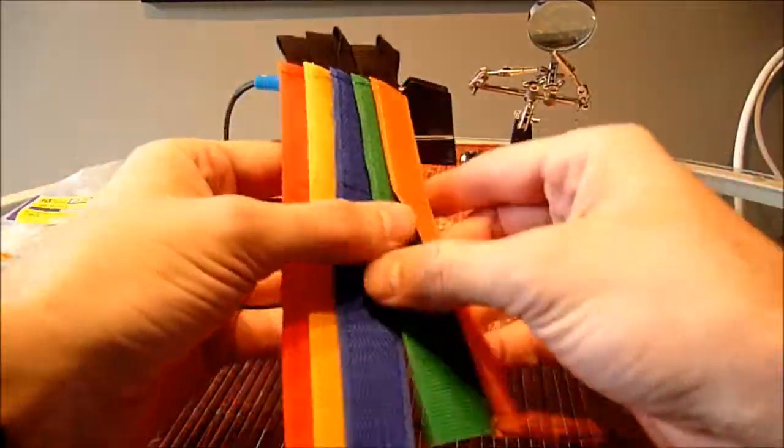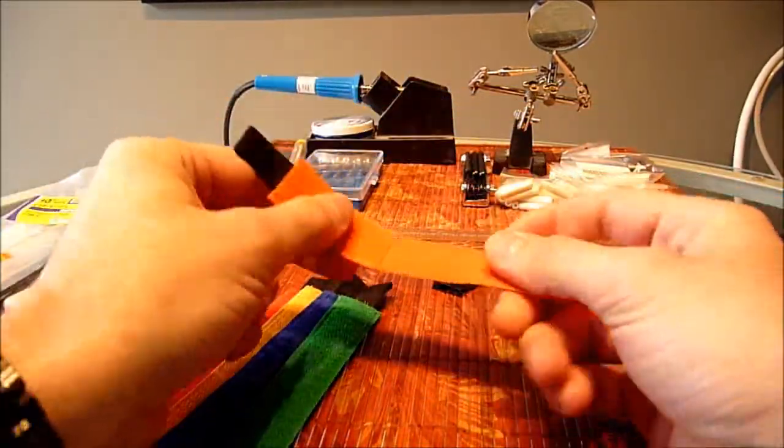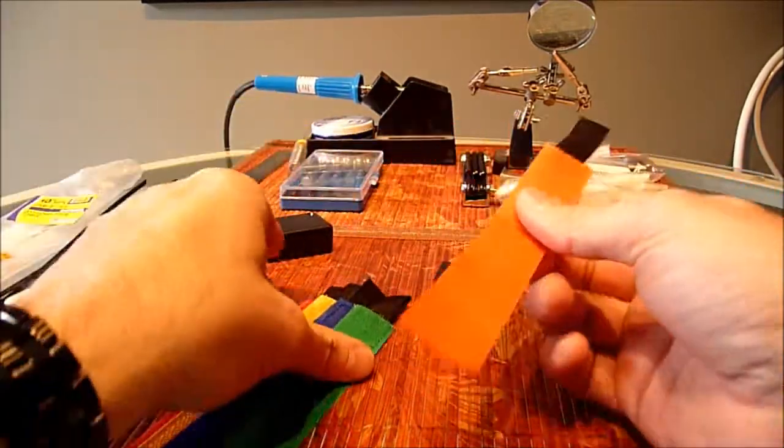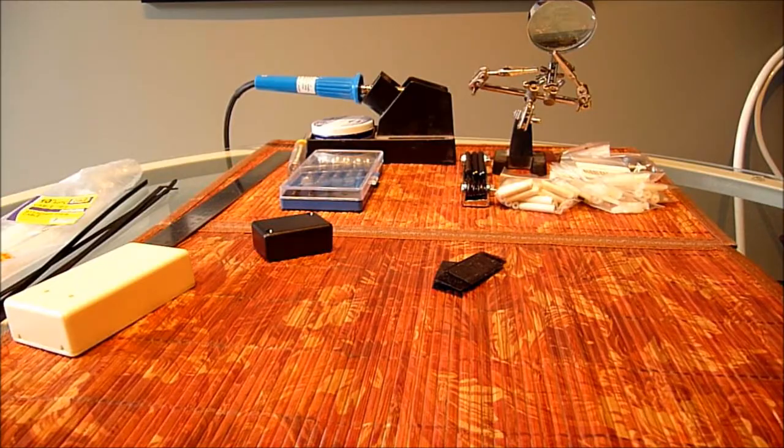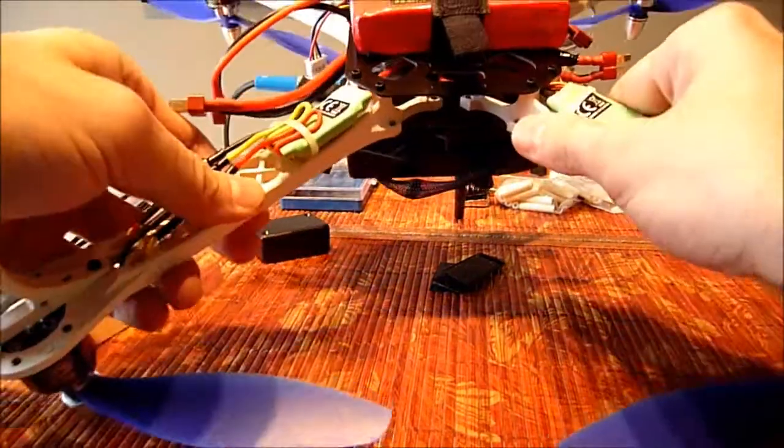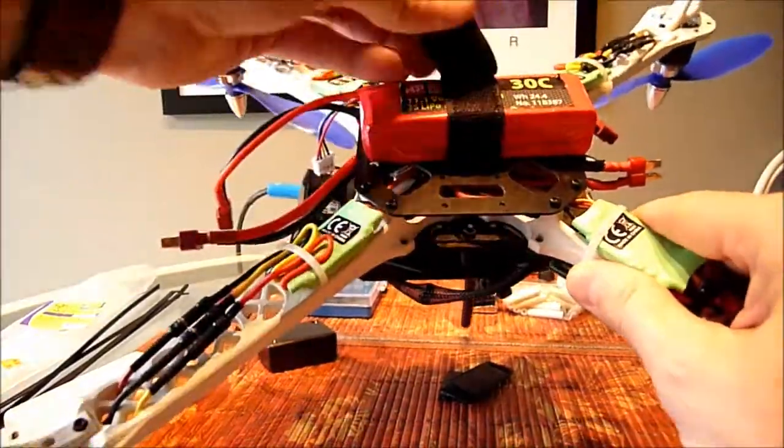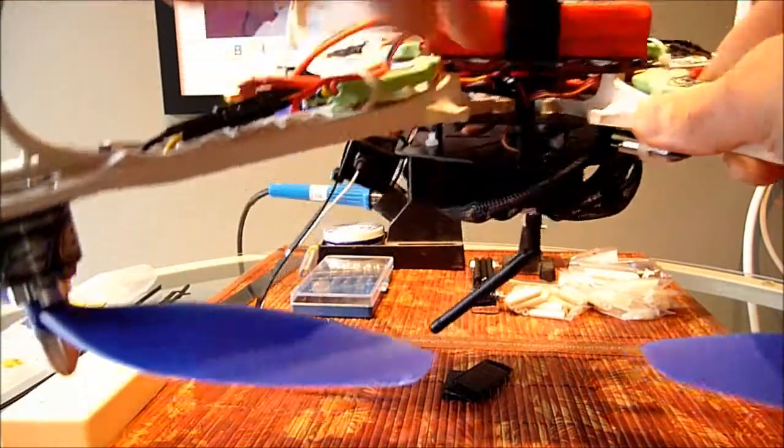One of the other things that I used just for the battery, these simple ties. They wrap around, and that's what I used for the battery. As you can see, it's just a simple wrap around to the bottom there.